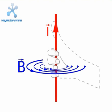If you place your right thumb in the direction of the current along the wire, then the direction of the magnetic field is in the direction of the other fingers wound around the wire.